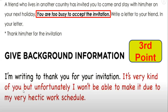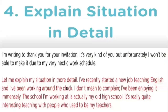So an example sentence for background information would be: 'It's very kind of you, but unfortunately I won't be able to make it due to my very hectic work schedule.' This references the task detail — you are too busy — and provides the previous background knowledge about your work schedule as the reason you cannot attend.